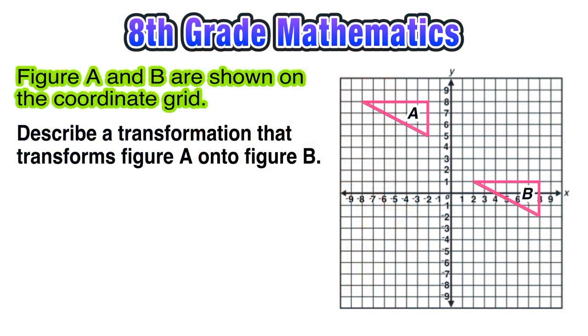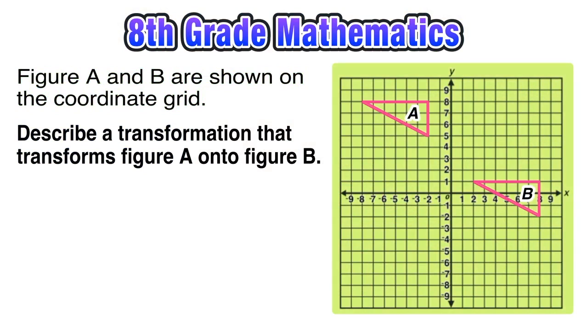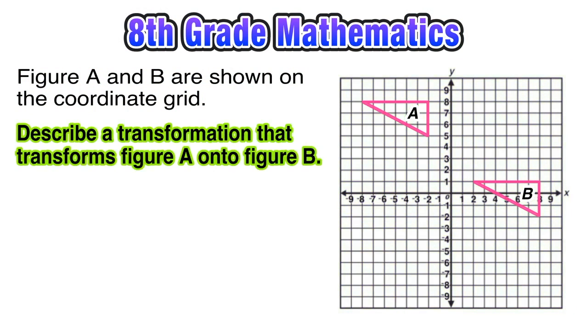Hey, what's up everyone, welcome back to this lesson where we have figure A and figure B shown on the coordinate grid and we have to describe a transformation that transforms figure A onto figure B. So basically, how are we getting figure A to its location at figure B?